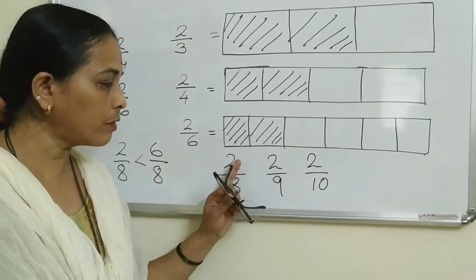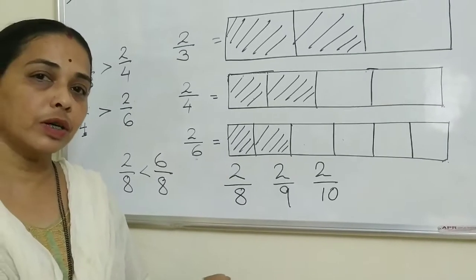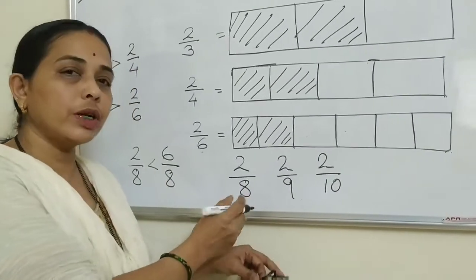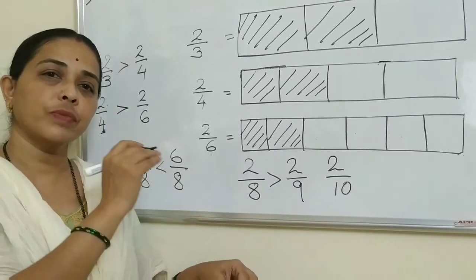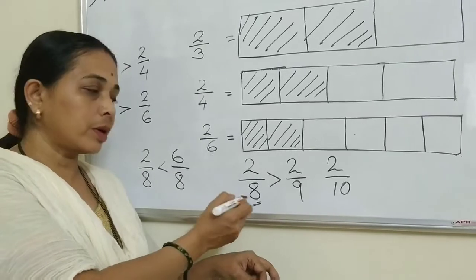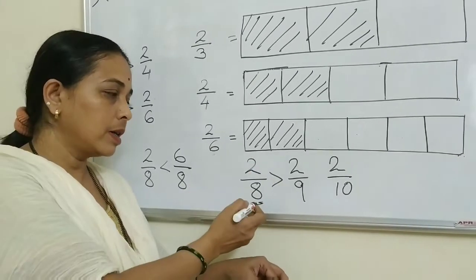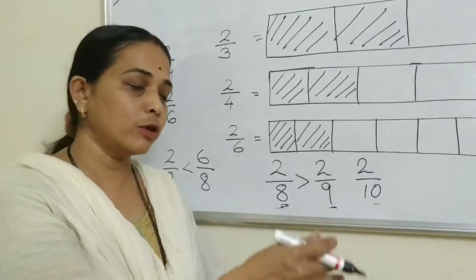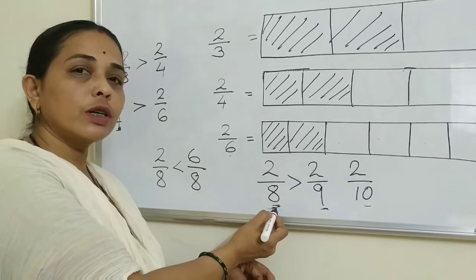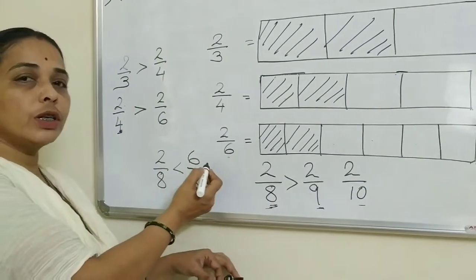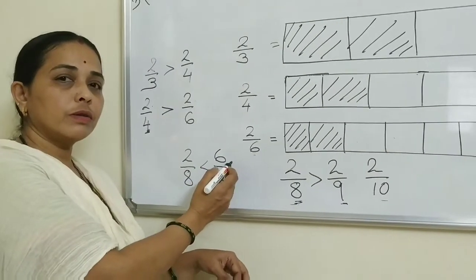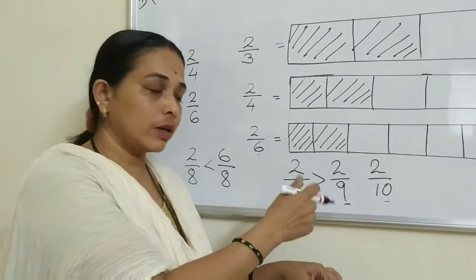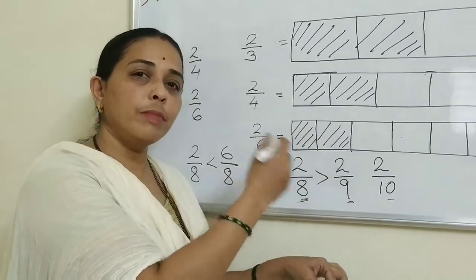Now here I have 2 upon 8, 2 upon 9, 2 upon 10 - which fraction is bigger? Numerators are same, so you will not look at numerators; you have to see the denominator. The denominator which is smallest means that fraction is the bigger fraction. Smaller denominator means you are cutting into fewer parts - eight parts, nine parts, ten parts each become progressively smaller. When numerators are same, see the denominator; when denominators are same, see the numerator. Bigger numerator means bigger fraction; smaller denominator means bigger fraction.